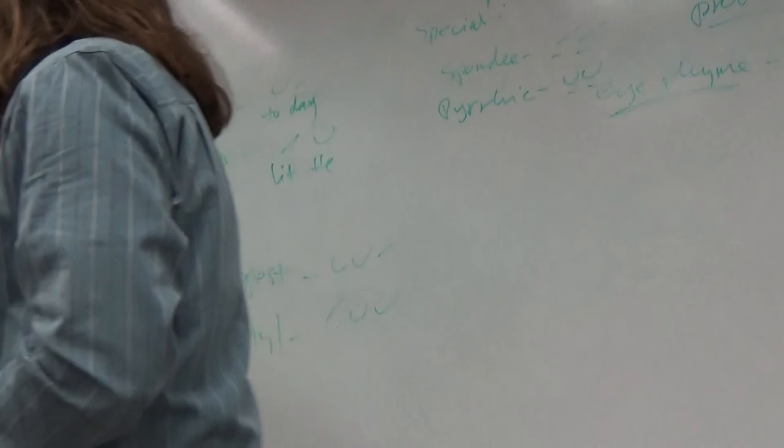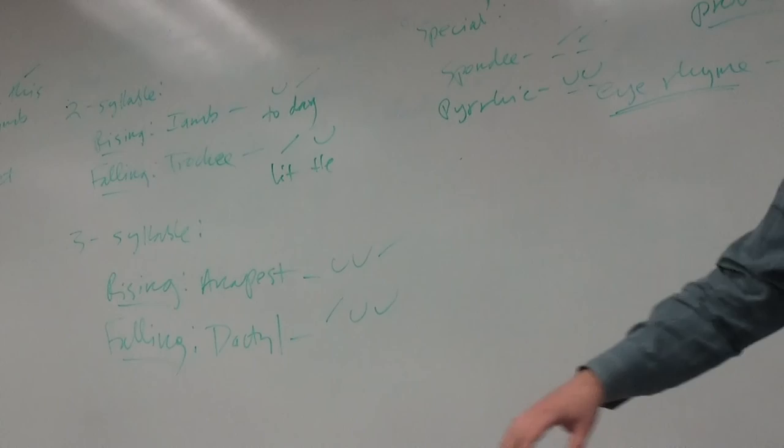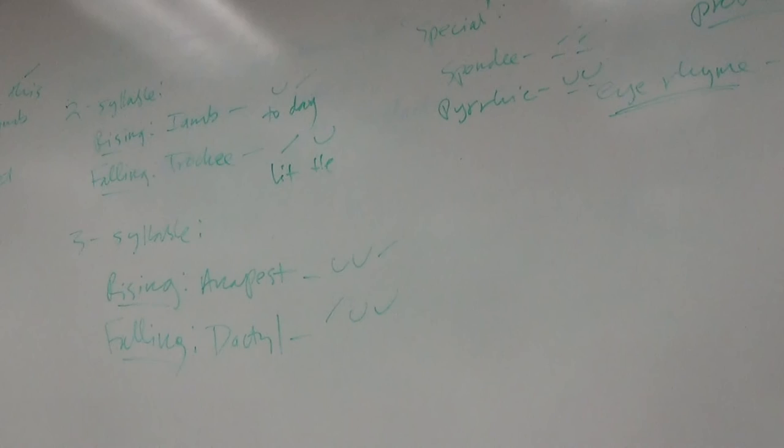Anapestic pentameter would have, how many syllables? Three. Three, right, so anapestic pentameter would have 15 syllables. It would be a very long line. Most ancient Greek epics are written in dactylic hexameter, so it's a very long 18 syllable line. Typically very long, slow lines. So longer lines tend to be slower, more kind of languid. Shorter lines tend to be faster and more forceful.